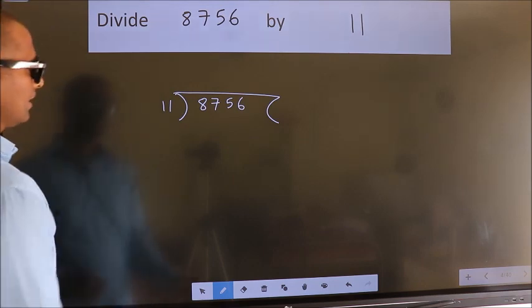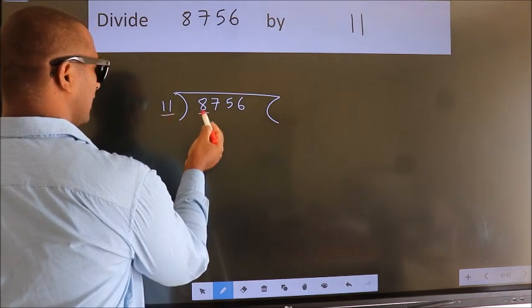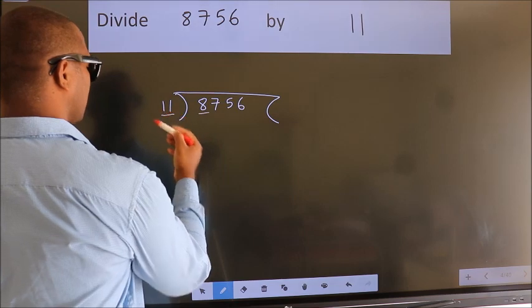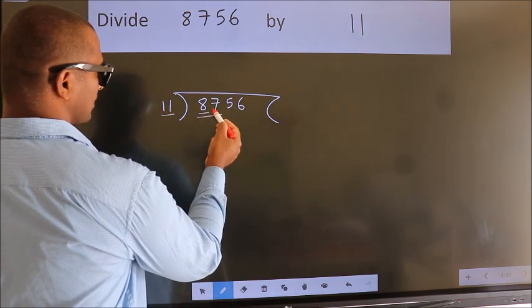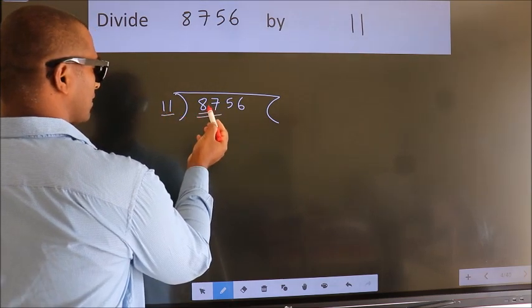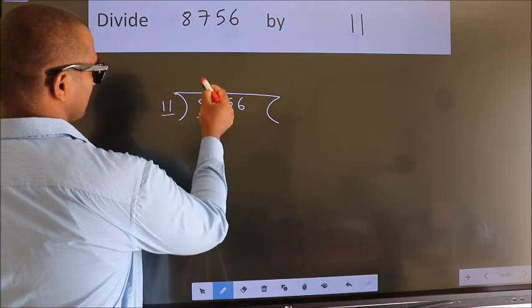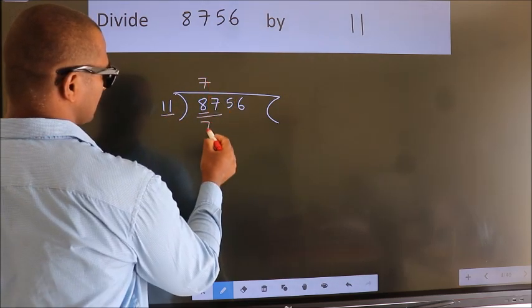Next, here we have 8. Here 11. 8 is smaller than 11, so we should take 2 numbers: 87. A number close to 87 in the 11 table is 11 sevens, 77.